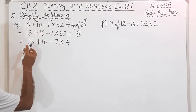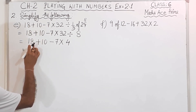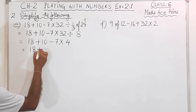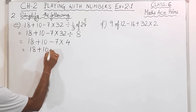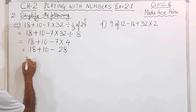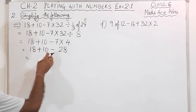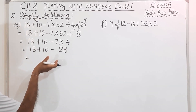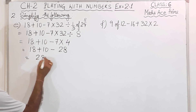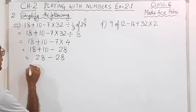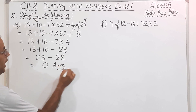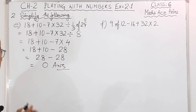Now after that, 18 — you can see here — multiplication is there. So let us do the multiplication first: 7 fours are 28. Now after multiplication comes addition, so 18 plus 10, 28 minus 28 equal to 0, and this is the answer.